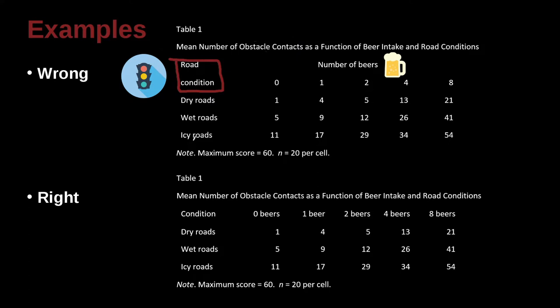Okay, down here is road condition, and then here's number of beers. It's getting a little bit hard to understand. I think this is number of beers: zero beers, one beer, two beers, four beers, eight beers.